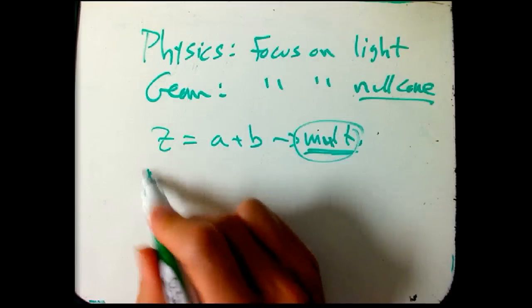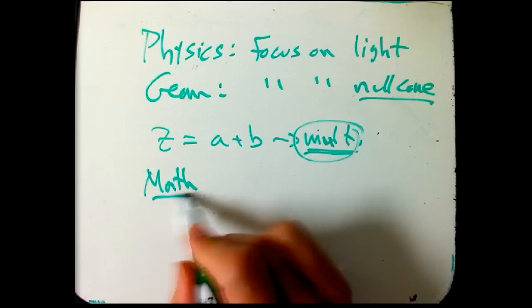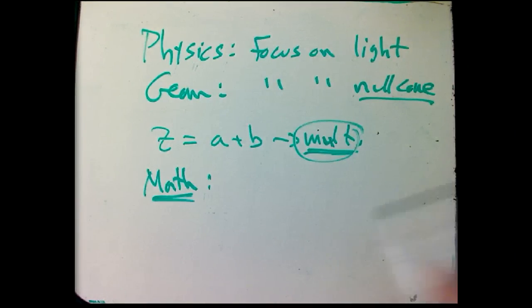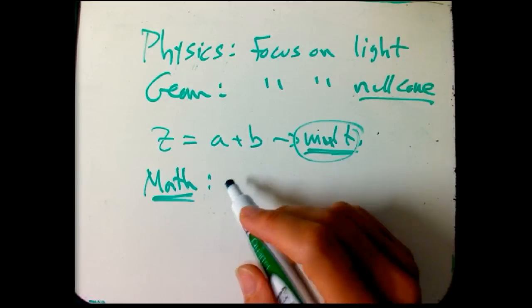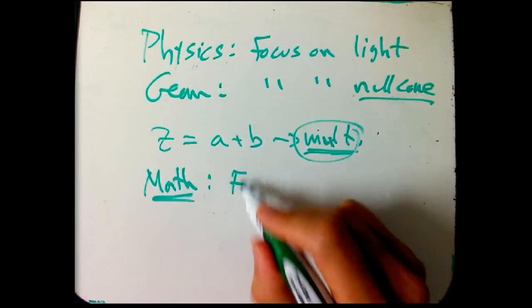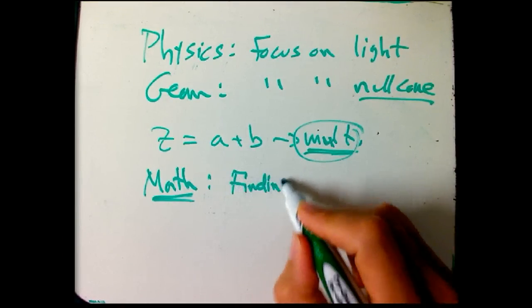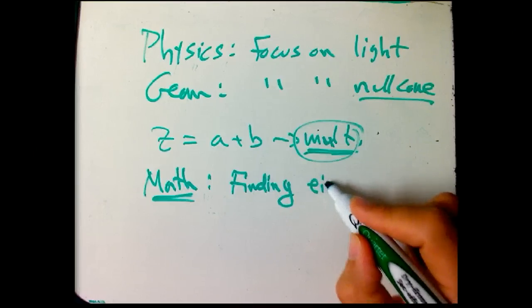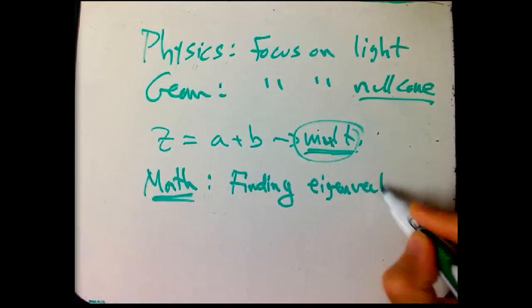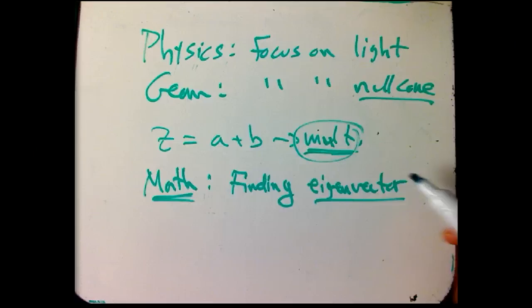There's a mathematical, sort of an algebraic justification for that, that if you know some linear algebra, what I was really doing is I was finding, you know, kind of an ad hoc way, an eigenvector, or realizing that a null vector must be an eigenvector for the Lorentz transformation, because it can't take a null vector to something else that's not null,